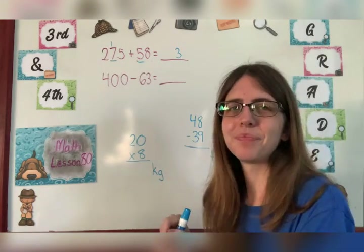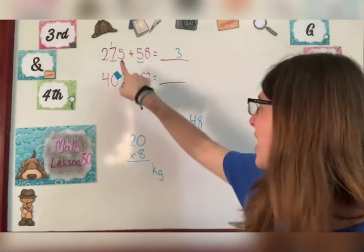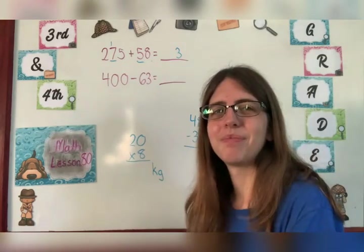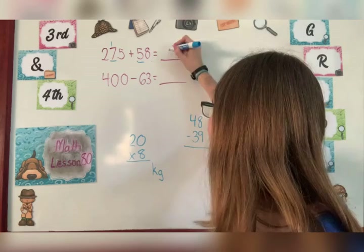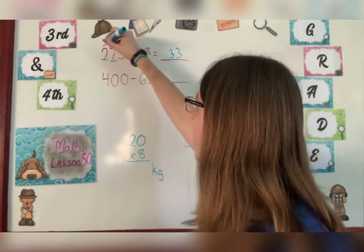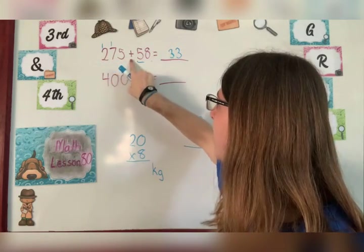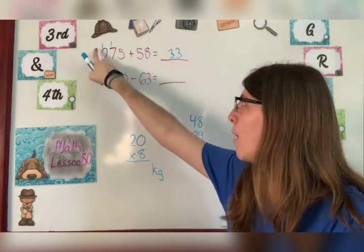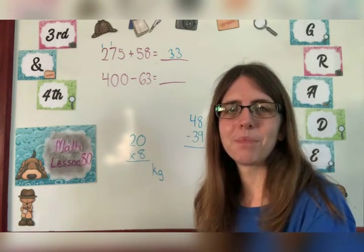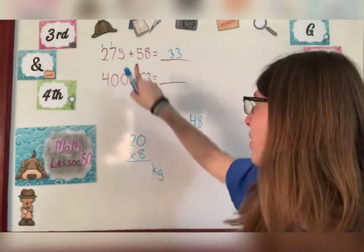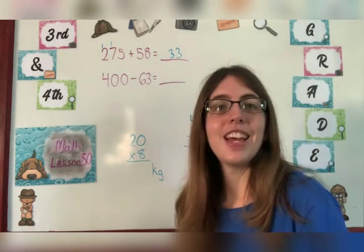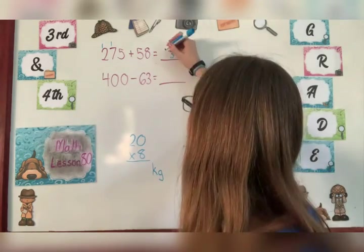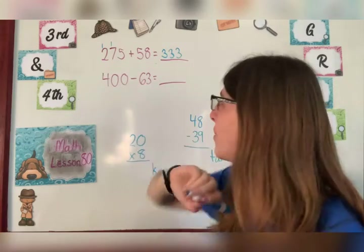One plus seven is eight. Eight plus five is 13 again. Okay. Carry our one now to the hundreds place. One plus two is three. Is there a number in the hundreds place here? No. So we're done there. Three hundred and thirty-three is your answer.